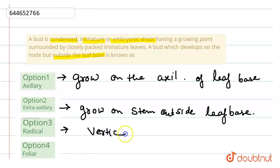And the fourth one is foliar. Foliar buds are those buds which grow on leaves other than node, like they grow on leaf base but other than node.